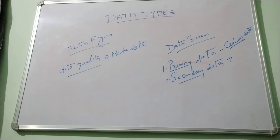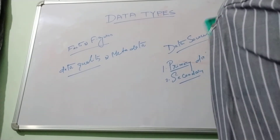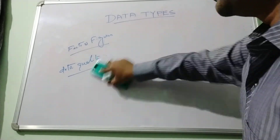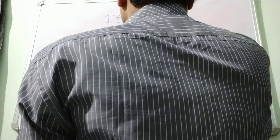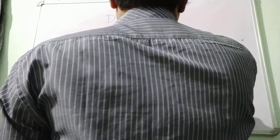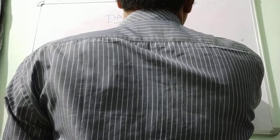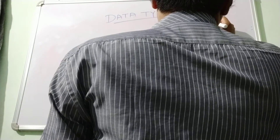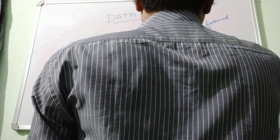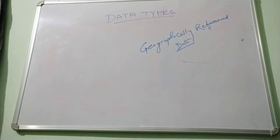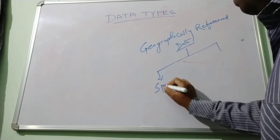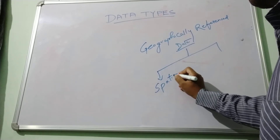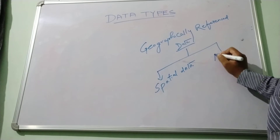In GIS, basically we are using geographically referenced data. Geographically referenced data describes the location and characteristics of spatial features. This geographical referenced data is classified into spatial data and attribute data.